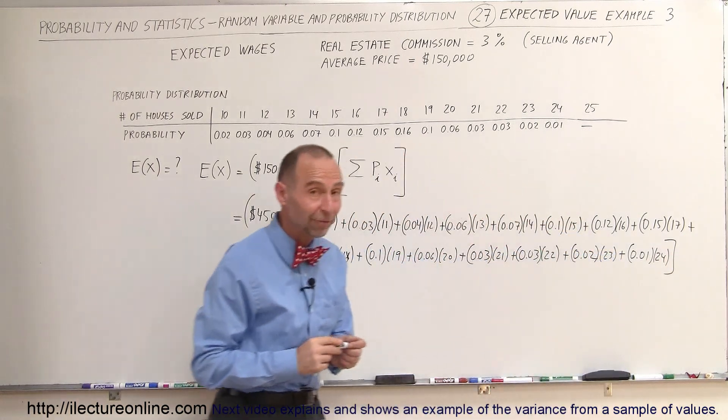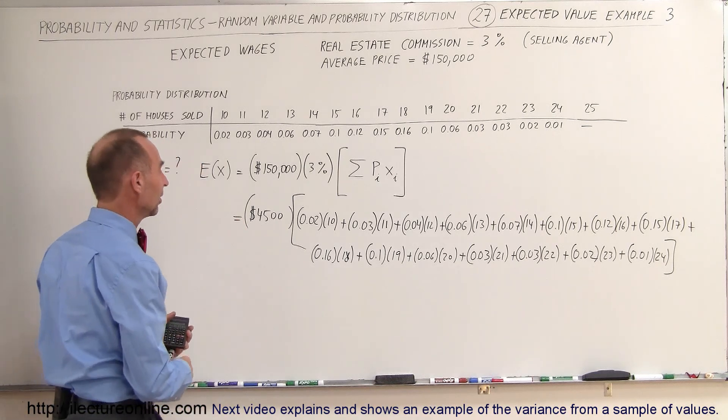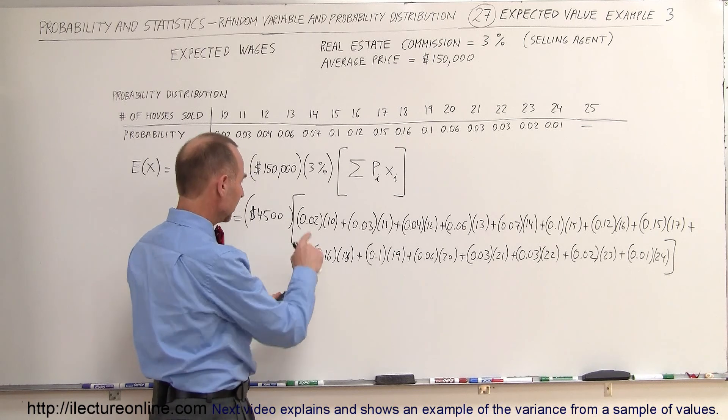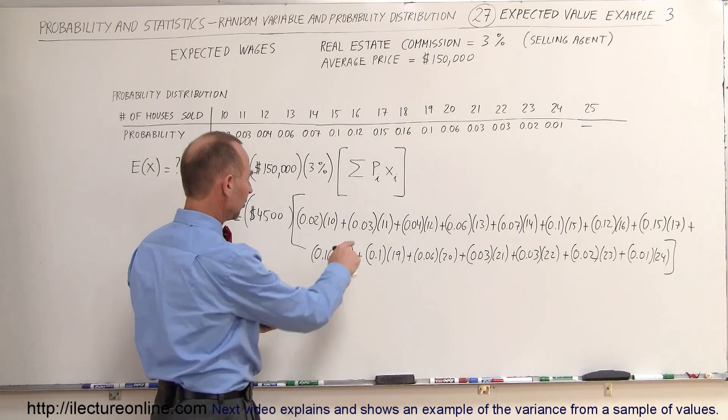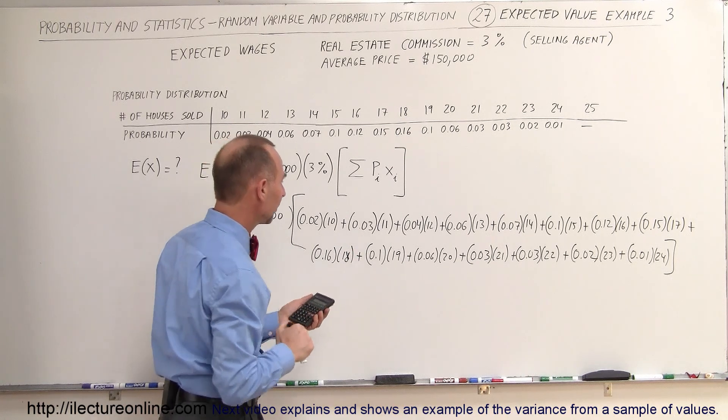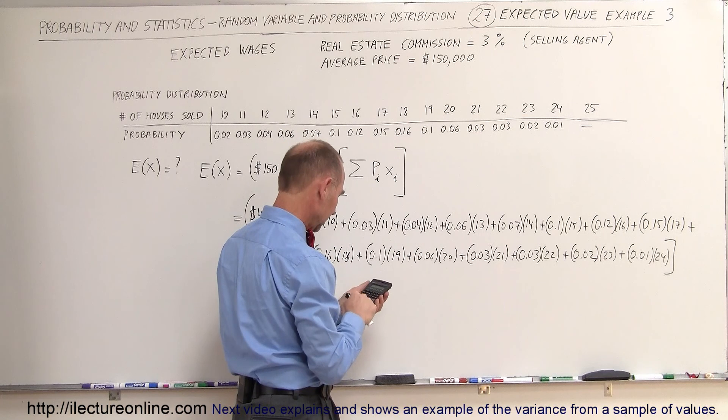All right, now all we have to do is work that out. Calculator problem will come in handy in this case. And so what would this be equal to? So this here would be, that would be 0.2 plus, this would be 0.33 plus, this would be 0.48 plus,